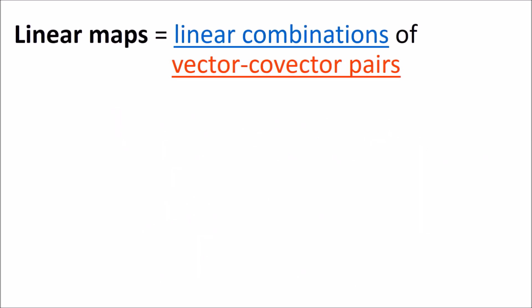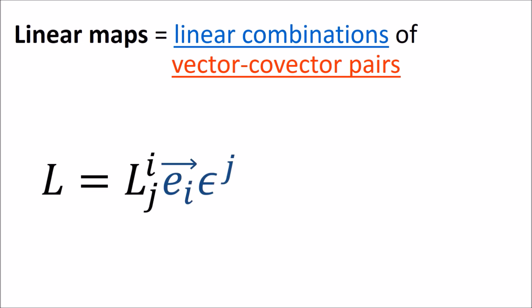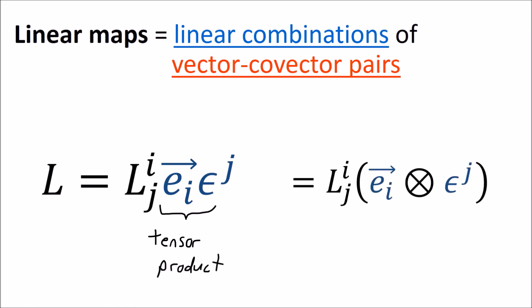Recall in the last video, I introduced a new perspective on linear maps. I said that linear maps can be written as linear combinations of vector-covector pairs. This process of combining vectors and covectors together is called the tensor product, which textbooks write with the circle-times symbol.